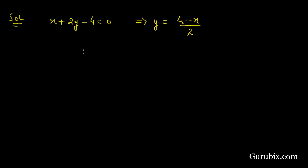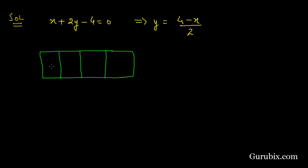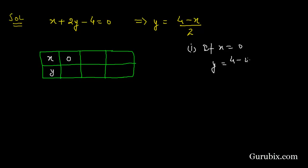Now we shall draw a table and find three solution sets — three points on this equation. Here is x and here is y. If x equals to 0, then y equals to 4 minus 0 over 2, which is 2. And if x equals to 2, then y will be equals to 1.